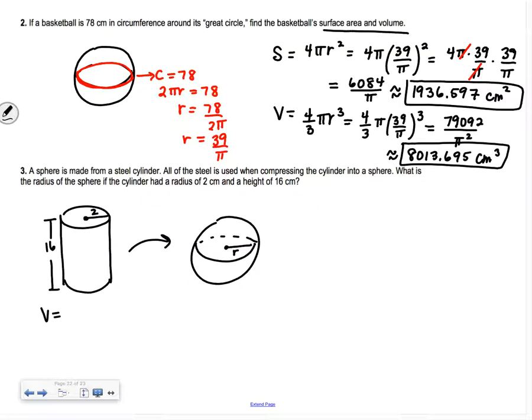First we need to find the volume of the cylinder because we're going to compress it down and create this sphere. Volume of our cylinder is area of the base times height, which is πr²h. We get π times 2 squared times 16, which gives us 64π.